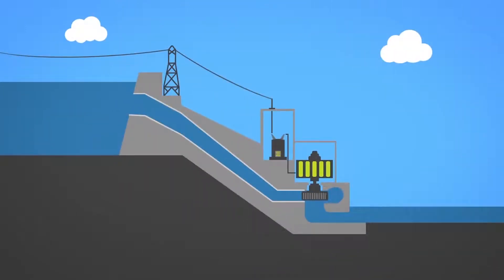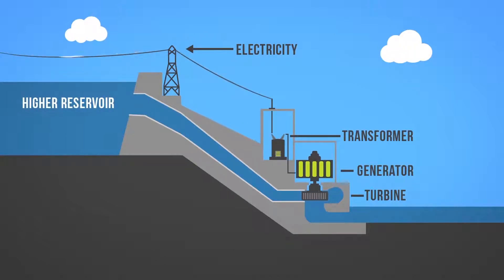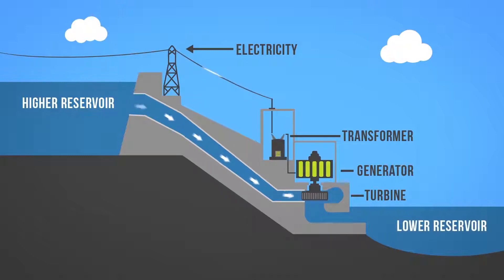There are two main types of hydroelectricity production: dams and run-of-river hydro. Dams utilize the potential energy from dammed water to produce electricity. A dam is a large barrier constructed to raise the level of water and control its flow. The elevation created by the dam generates gravitational force for turning the turbine when water is released.